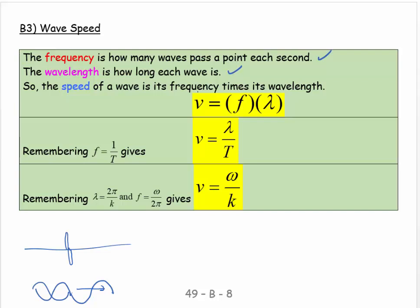So the speed would be the frequency times the wavelength. If you like, as an analogy, you can say that the frequency is your cadence, how quickly you make steps. So this is like steps per second. And your wavelength is how long each step is.